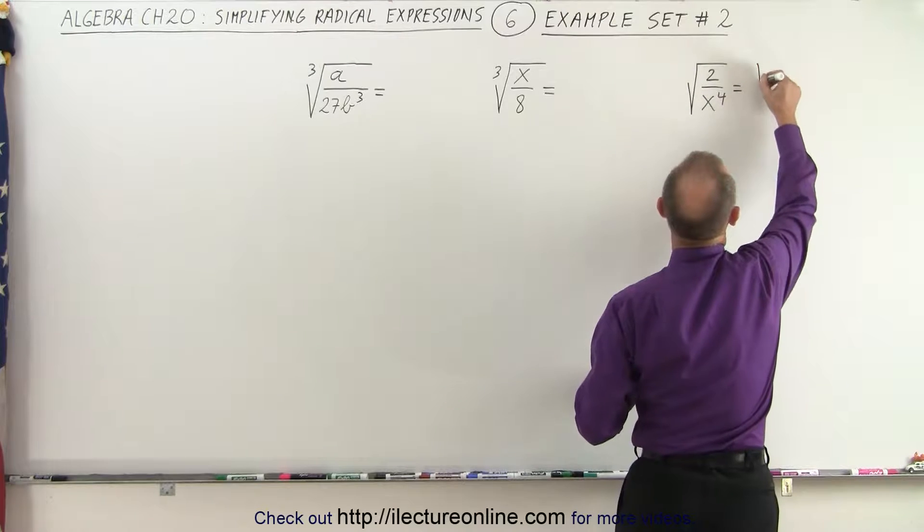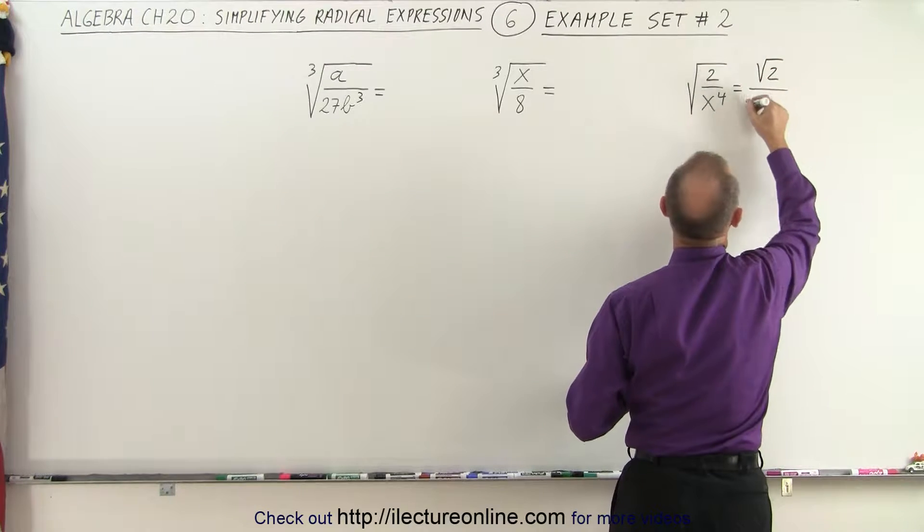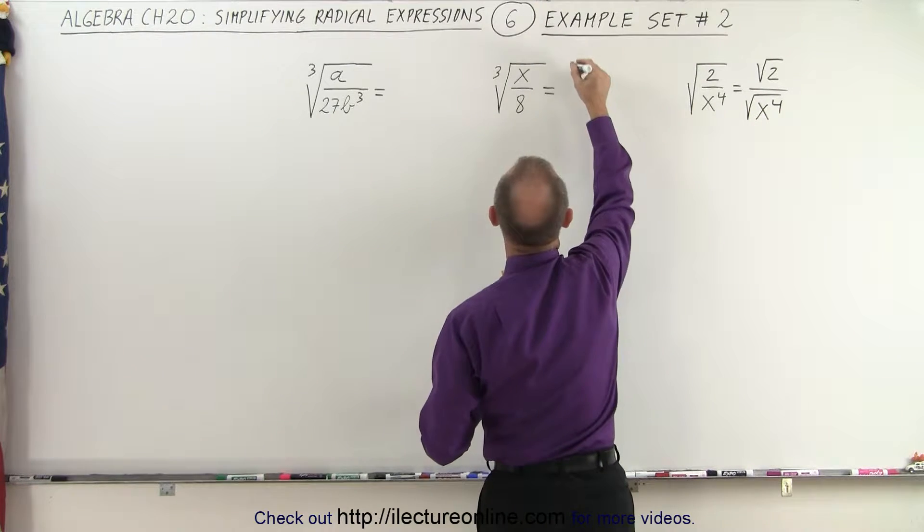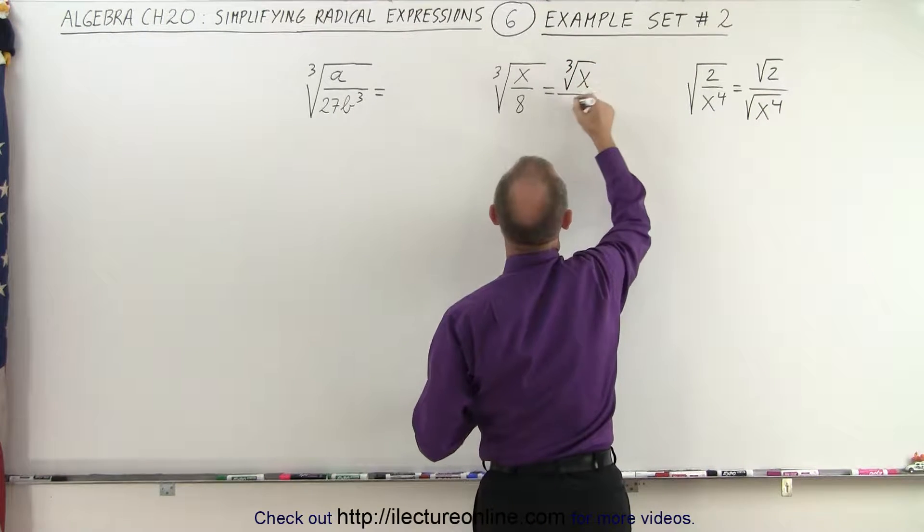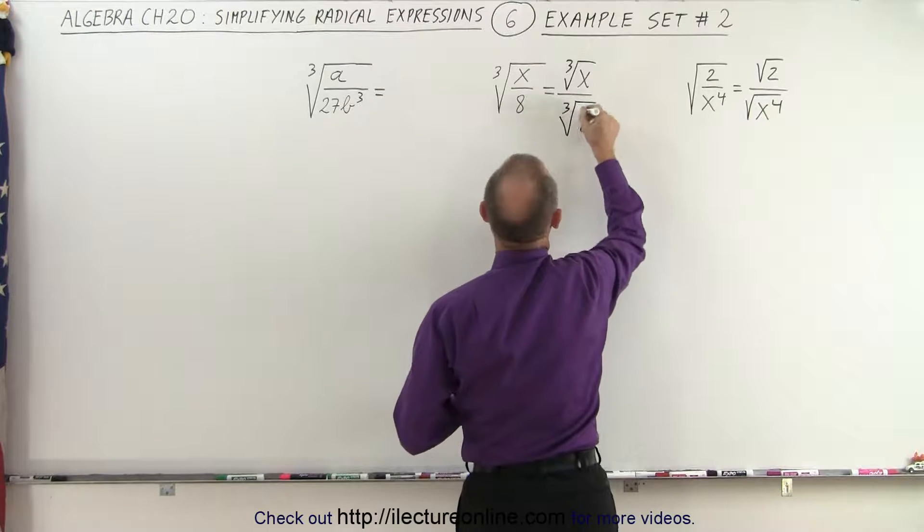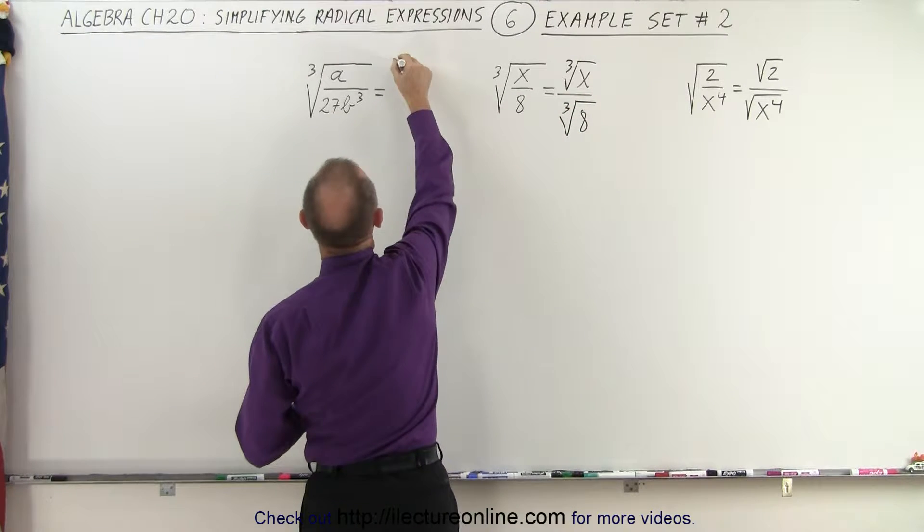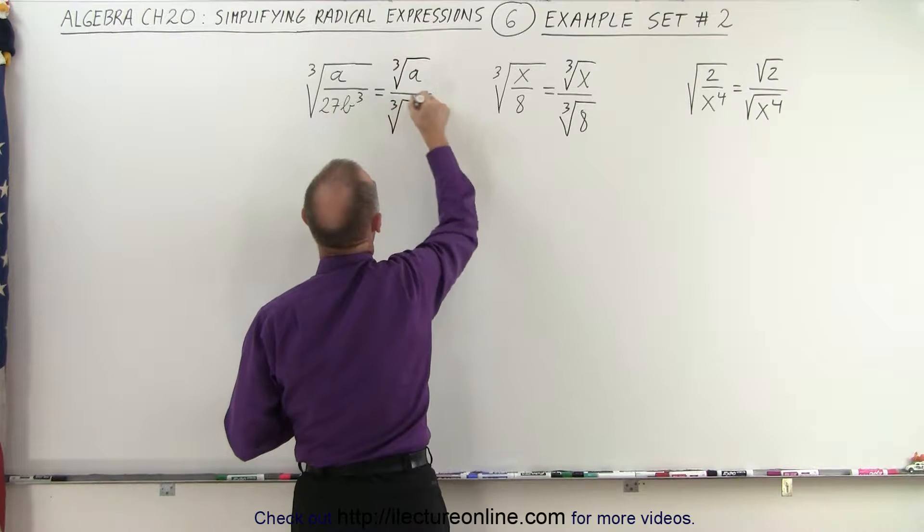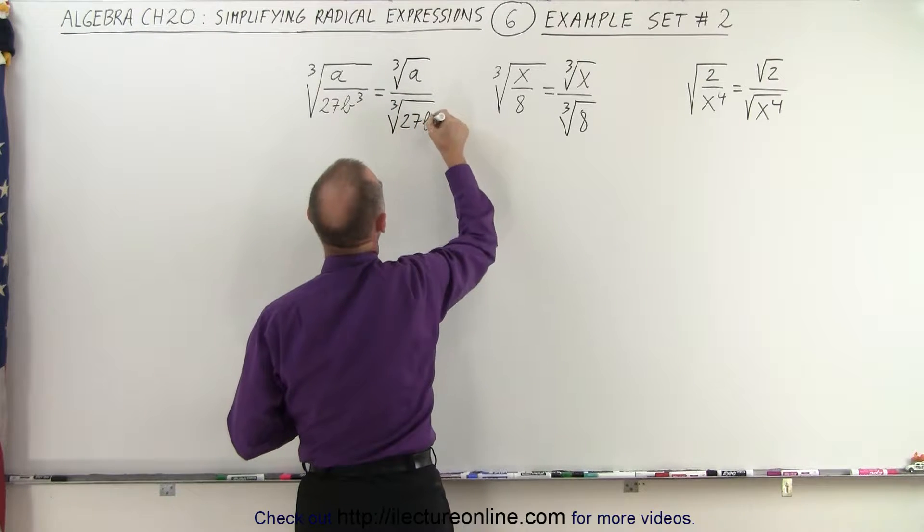So this can be written as the square root of 2 divided by the square root of x to the 4th. This will be written as the cube root of x divided by the cube root of 8, and this will be written as the cube root of a divided by the cube root of 27b cubed.